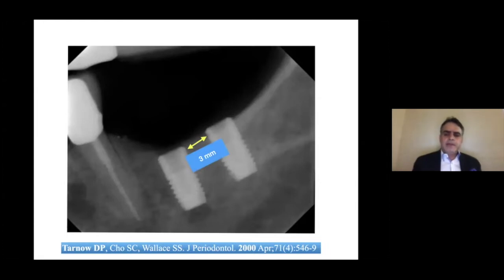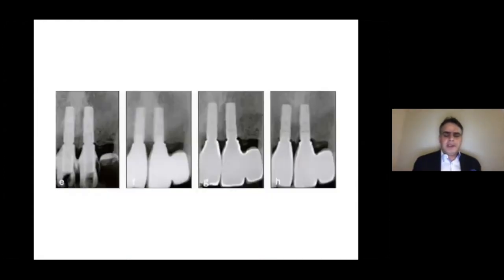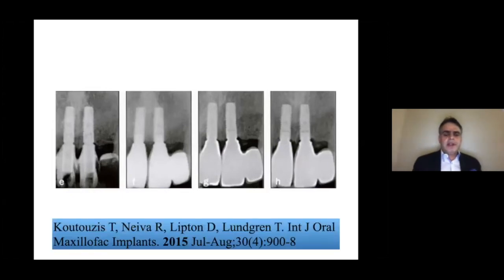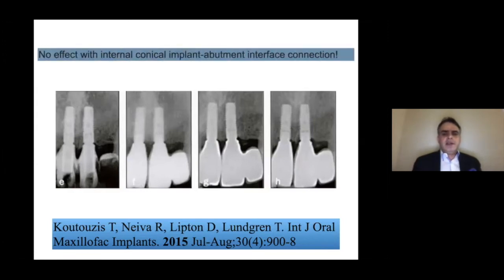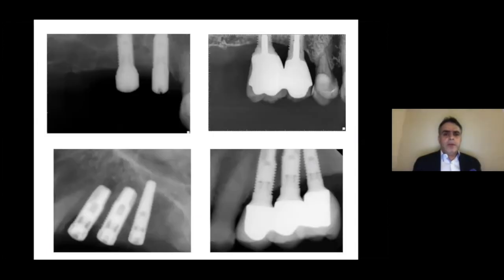This finding has been argued by many studies afterwards, especially one that used implants with platform-switched abutments. They realized that marginal bone level was stable even after 24 months, even in situations where the horizontal distance between the implants was less than three millimeters. So probably it's not just the horizontal distance between the implants — there might be other factors responsible for marginal bone loss that takes place after implant placement in multiple-unit implant restorations.